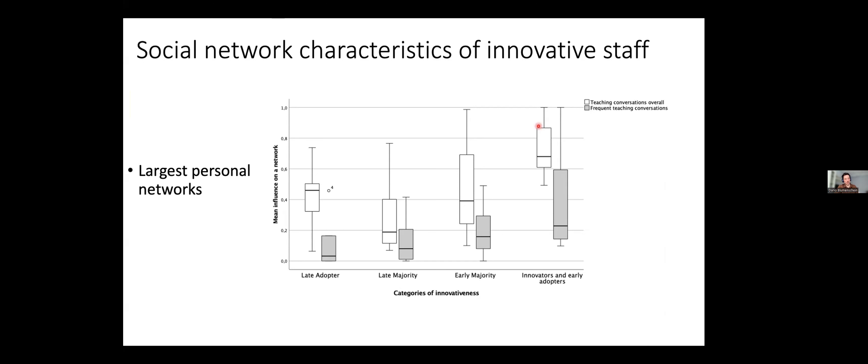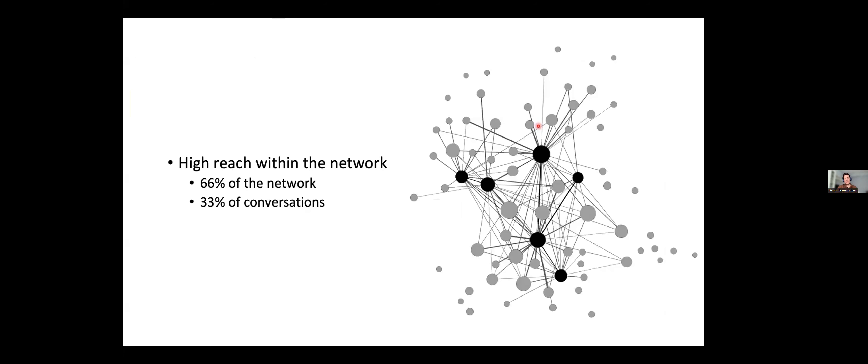And that also became something interesting that we said that's something that we have to elaborate on a bit later. Another quite interesting thing for us that we found is that these few innovative people have very high reach within the network. So six of them basically talk to the rest of the 66% of the network, and six of them are responsible for a third of all conversations that have happened at the department in the previous six months. So there's definitely quite a big role that they play when it comes to informal teaching conversations.